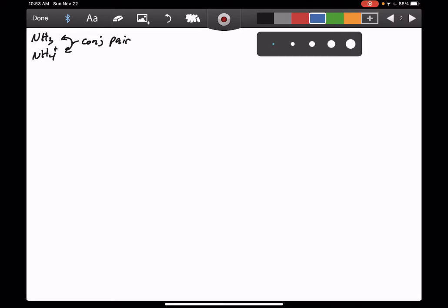So we can write that equilibrium. We're going to have NH3. We're going to write this as a KB reaction since we were given a KB for NH3. So NH3 plus H2O goes to NH4+, plus OH-.